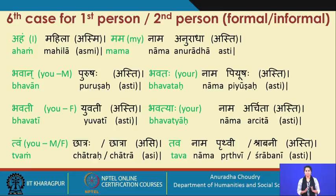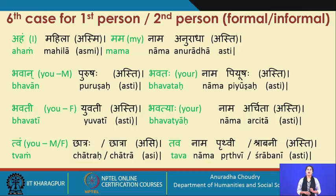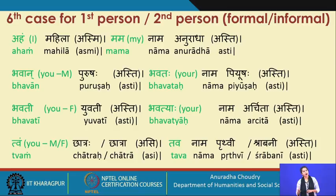So bhavan purushaha becomes bhavatah purushaha in the masculine genitive, and bhavatah naam in the masculine. The feminine form is bhavati, meaning a young woman — bhavati yuvati. I emphasize the length of the vowel because it is a long sound. The genitive form of bhavati is bhavatiyah — for example, bhavatiyah naam Archita.